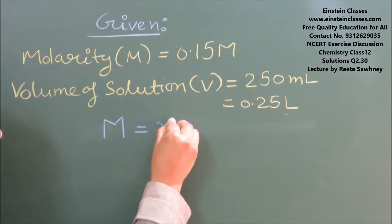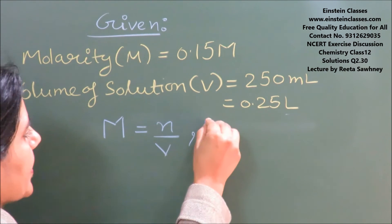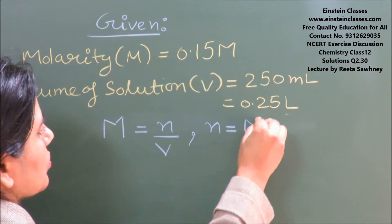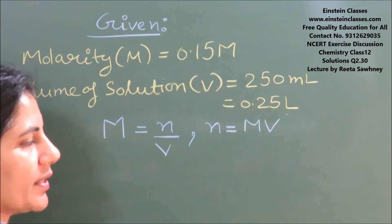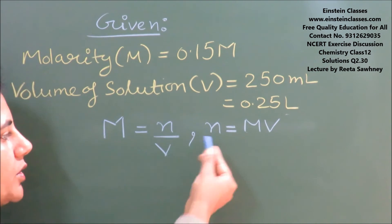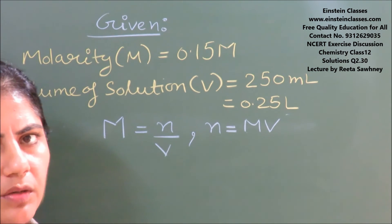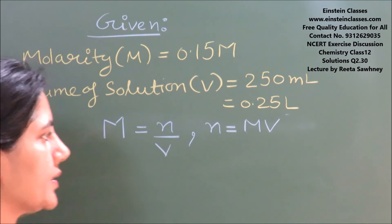Molarity is moles of solute by the volume of solution. So, we can also write moles of solute equals molarity times volume. By placing the values of molarity and volume we can find out the moles of benzoic acid. And from the moles of benzoic acid we can find out the mass of benzoic acid.